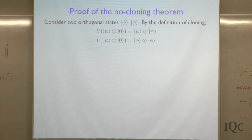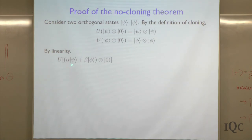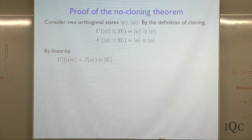So U is, if it's a valid quantum mechanical transformation, U is a unitary transformation, although we're actually only going to use the property that it's a linear transformation.